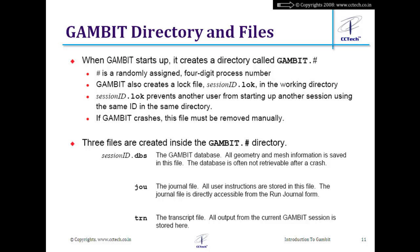The third file is the TRN file — the transcript file. GAMBIT stores all messages it displays in this file, such as 'volume created,' 'mesh created,' and element counts. This is very useful for debugging — for example, if volume meshing fails, you can open the TRN file to find the name of the face that failed to mesh and then apply different meshing criteria to it.